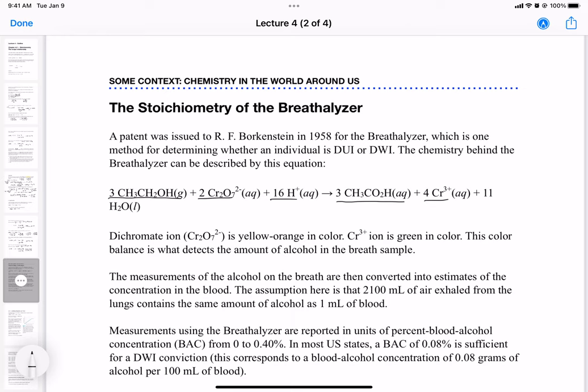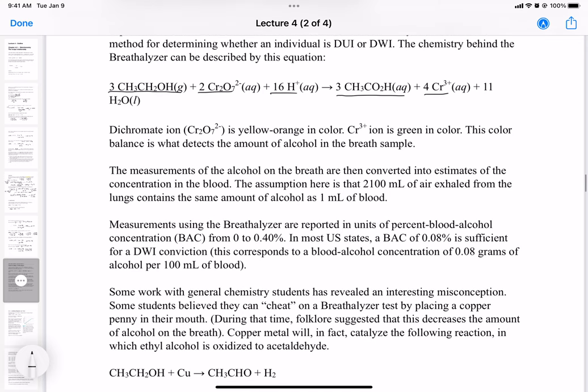So we can make a determination of the blood alcohol content based on these measurements. Measurements using a breathalyzer are reported in BAC or blood alcohol content from 0 to 0.40 percent. In most states here in the United States, a BAC of 0.08 percent is sufficient for a DWI conviction. This is basically 80 milligrams or 0.08 grams of alcohol per 100 milliliter of blood.